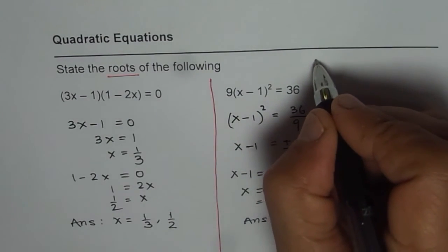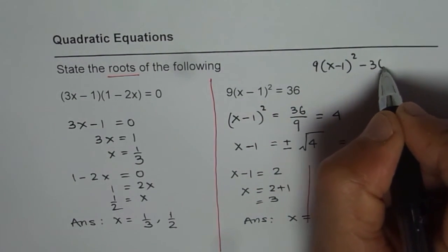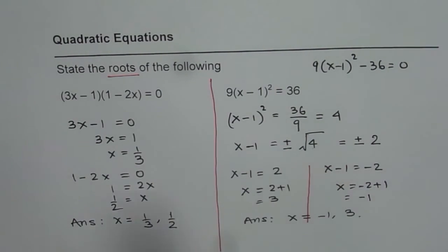I could have written this question like this also: 9 times x minus 1 whole square minus 36 equals 0. And then this step and follow, or in factored form. I hope that helps. Thank you.